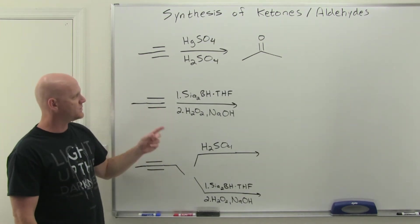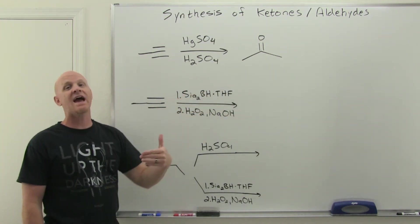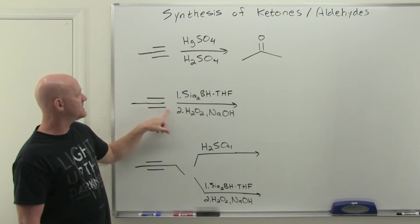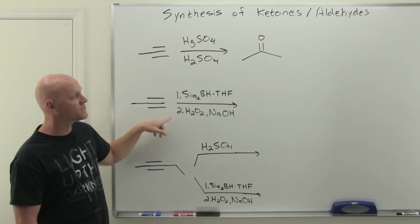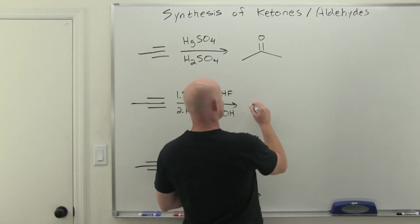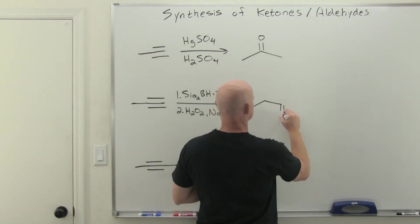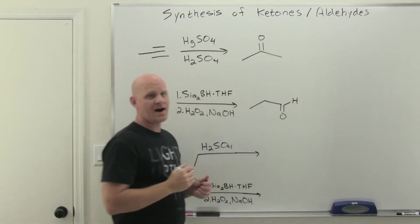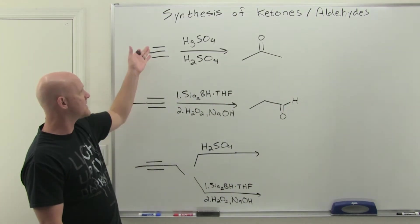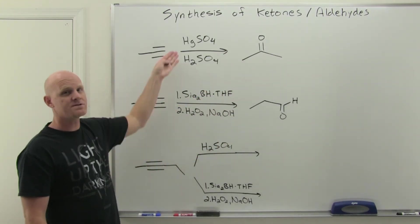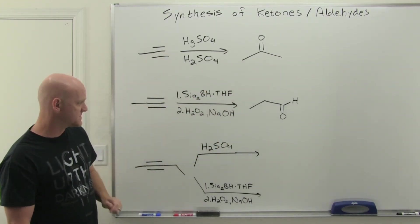Now, if you use that terminal alkyne with hydroboration oxidation, this goes anti-Markovnikov. And now it'll be the terminal carbon, the less substituted carbon, that gets the double bond to oxygen instead. And so in this case, we'll form an aldehyde. So for a terminal alkyne, we can form either the ketone or the aldehyde, depending on which of our hydration reagents we use.